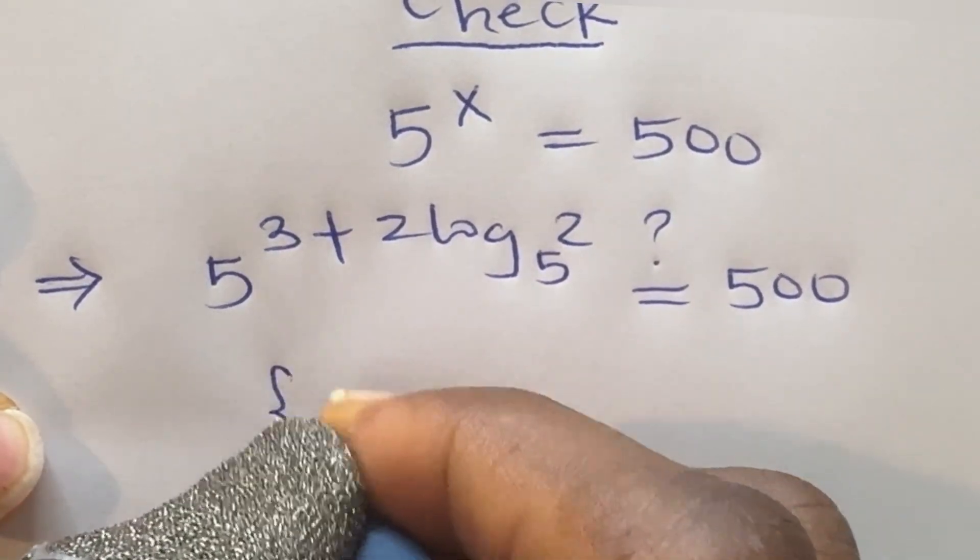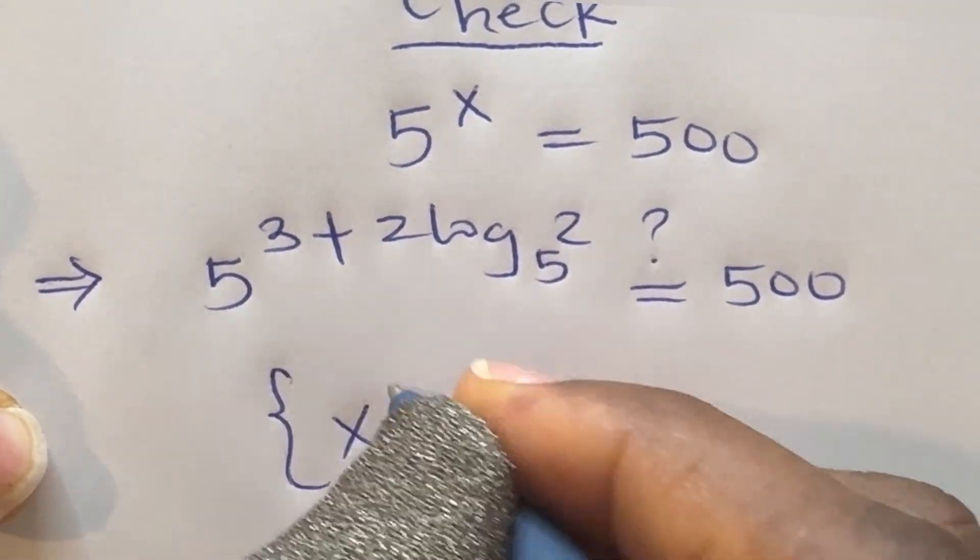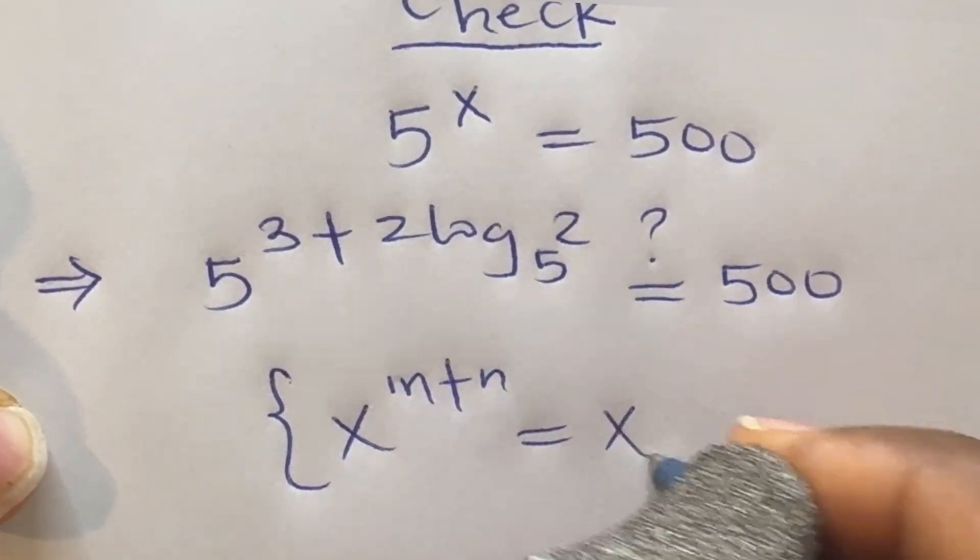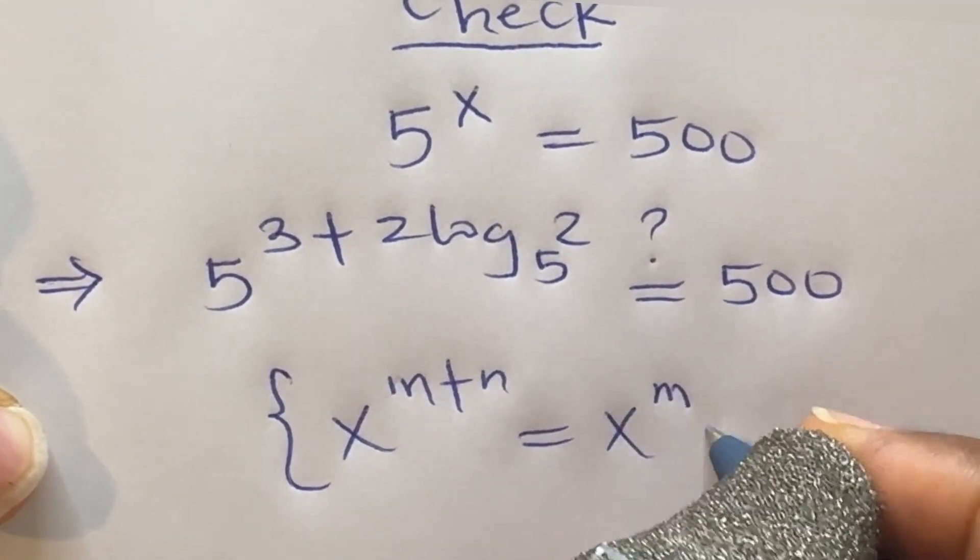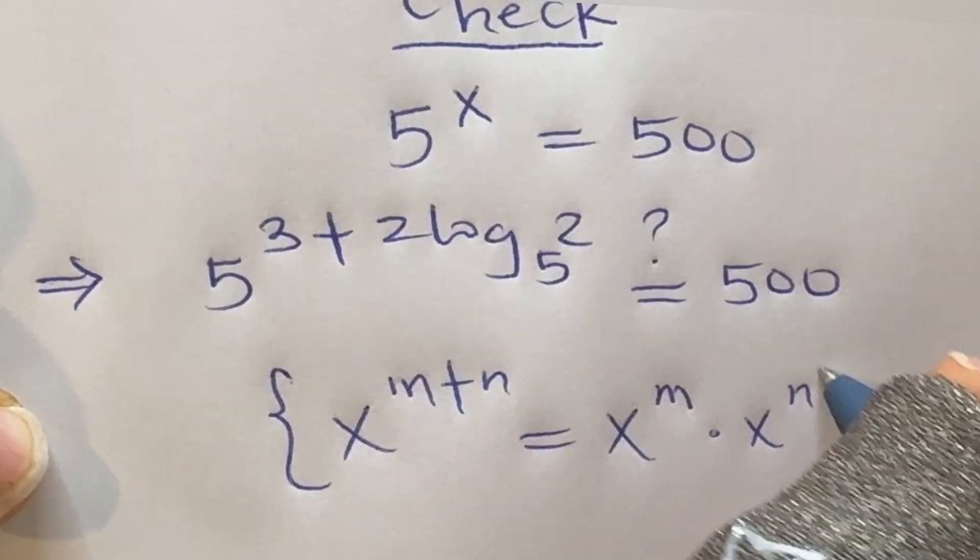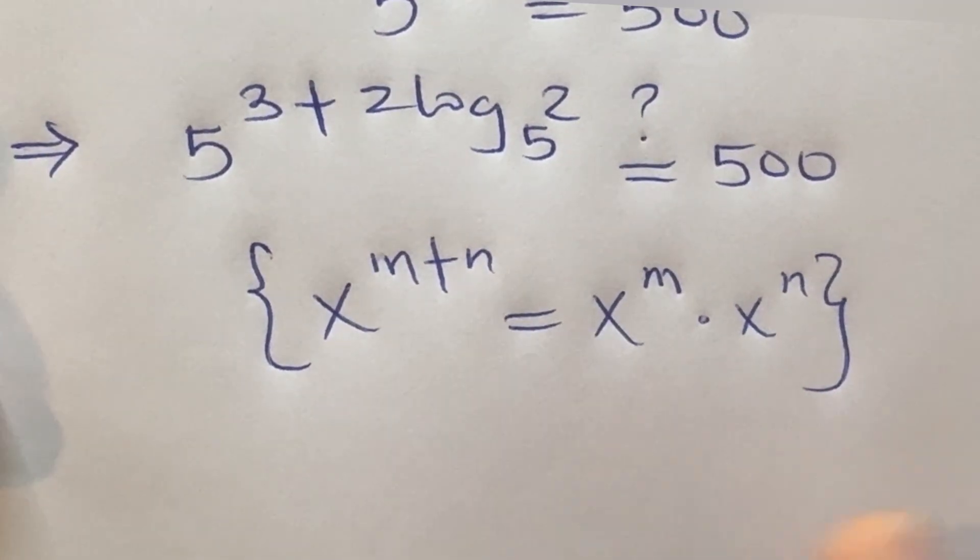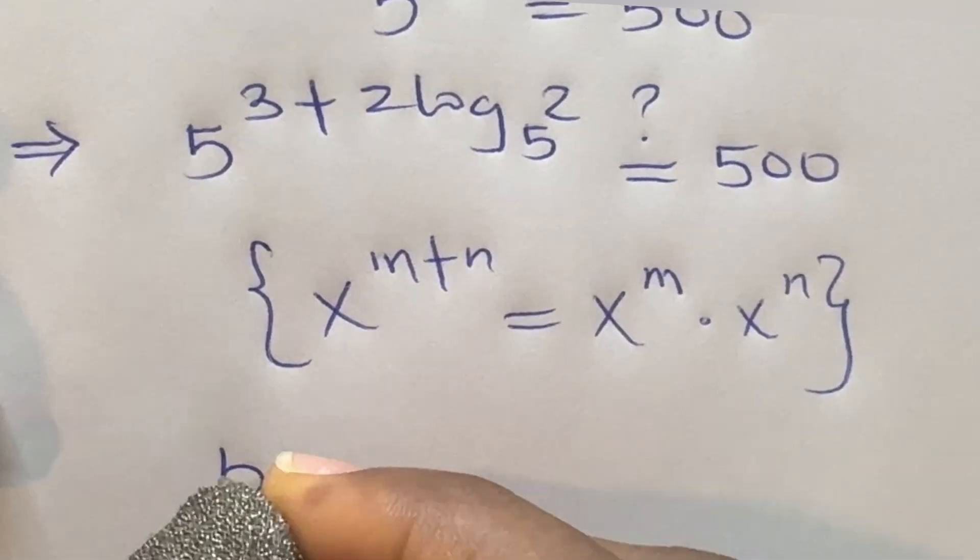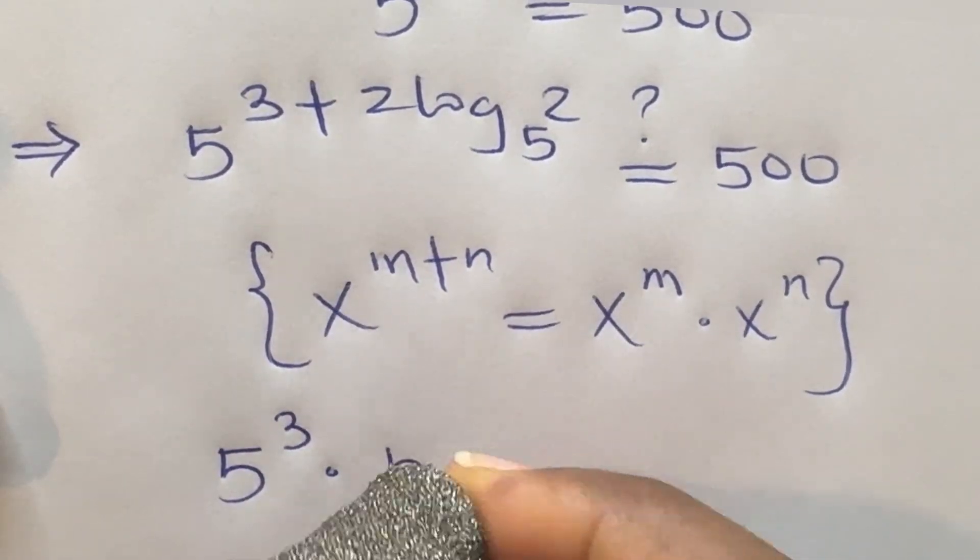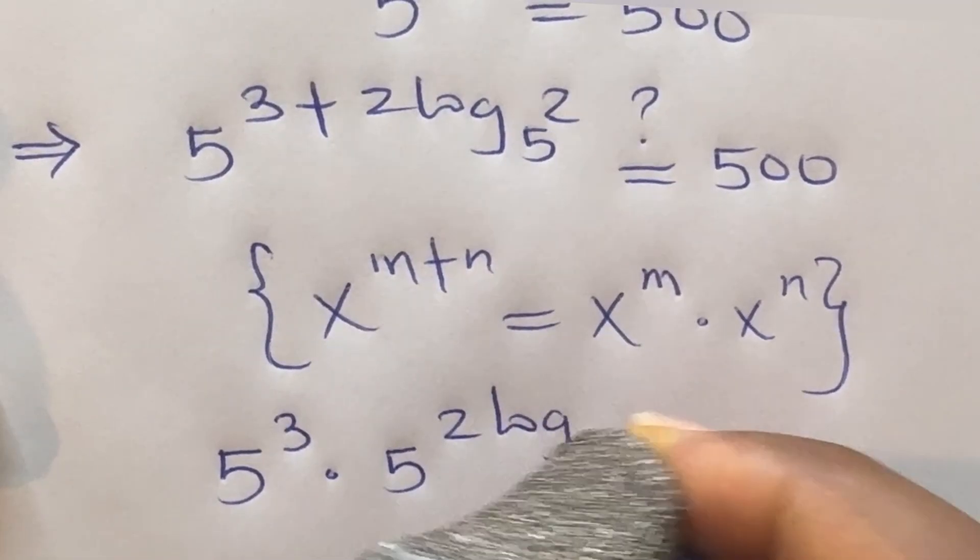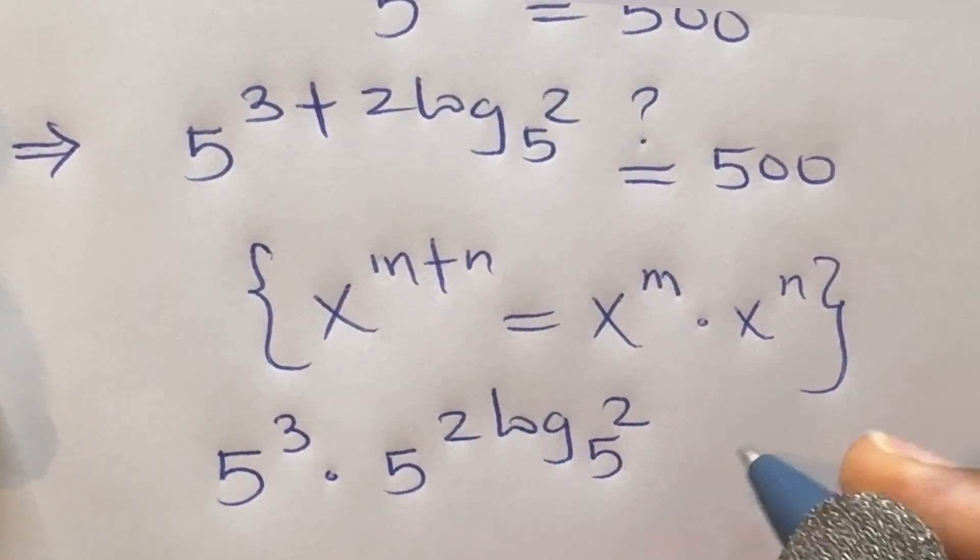We'll use this law of indices: x raised to power m plus n is equal to x raised to power m times x raised to power n. To expand this exponent, this will give us 5 raised to power 3 times 5 raised to power 2 log 2 base 5.